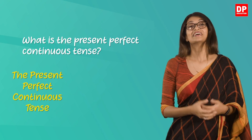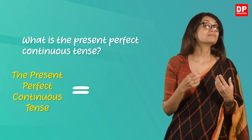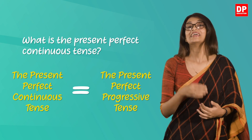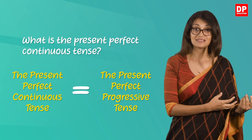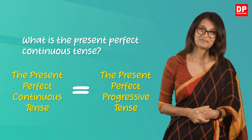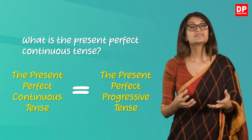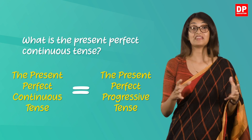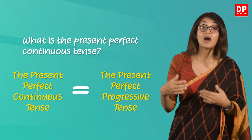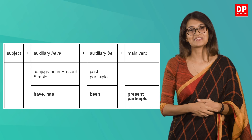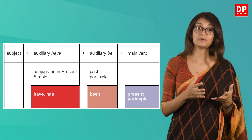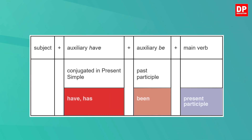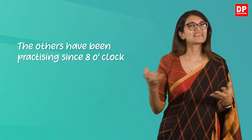The present perfect continuous tense is also known as the present perfect progressive tense. It is used to show that something started in the past and is continuing till the present time. This tense uses two auxiliary verbs together with the main word. The construction is: has or have + been + the present participle, which is the root verb plus -ing.